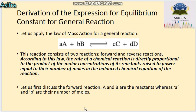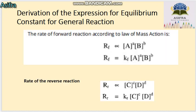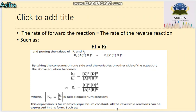Looking at the forward reaction for this general case, A and B form the forward reaction expression with their coefficients as powers. Combining the rate of forward reaction and rate of reverse reaction at equilibrium gives us the equilibrium constant expression. This combined ratio is known as the equilibrium constant Kc.